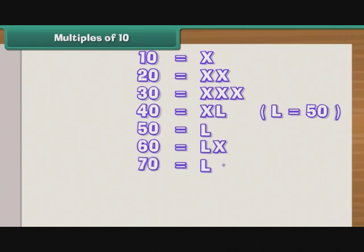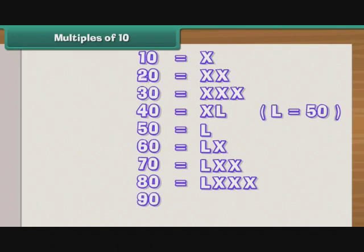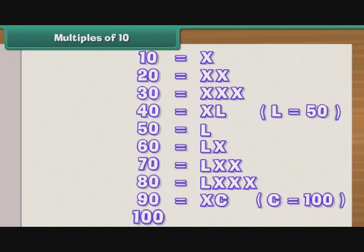70 is 50 plus 20, that is LXX. 80 is LXXX. 90 is 10 less than 100, so it is written as XC, where C stands for 100, and 100 is C.